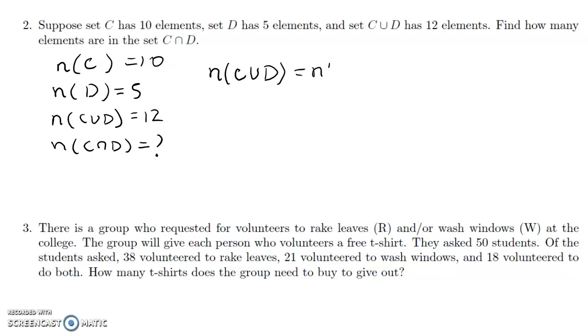We take the number in each, so the number in C plus the number in D. But then we have to subtract off the amount that we overcounted.